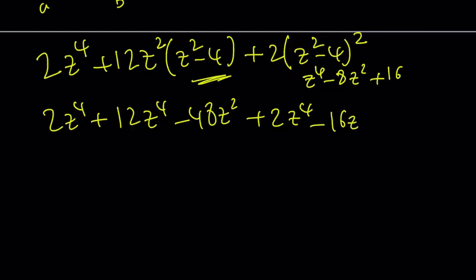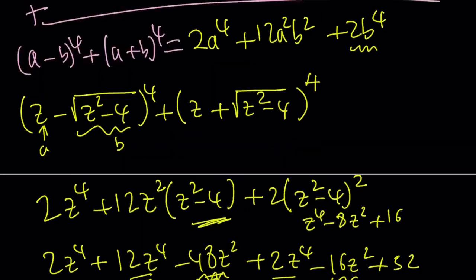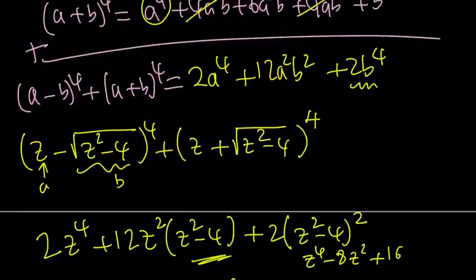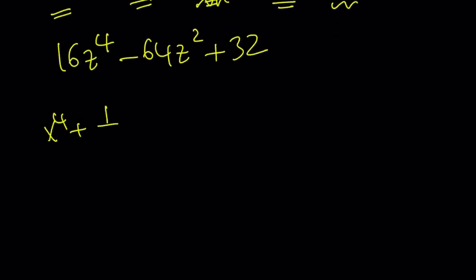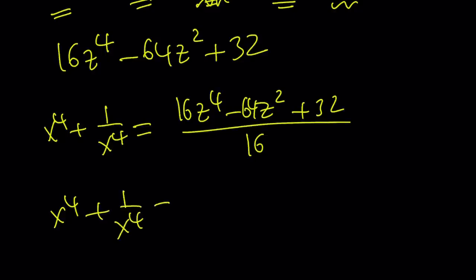Let's simplify. This gives us 2z to the fourth plus 12z to the fourth minus 48z squared, plus 2 times z to the fourth minus 8z squared plus 16, which is 2z to the fourth minus 16z squared plus 32. Combining like terms: 2z to the fourth plus 2z to the fourth plus 12z to the fourth equals 16z to the fourth, minus 48z squared minus 16z squared equals minus 64z squared, plus 32. Dividing by 16 gives x to the fourth plus 1 over x to the fourth equals z to the fourth minus 4z squared plus 2.